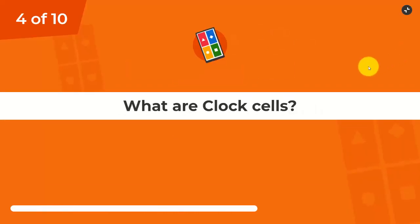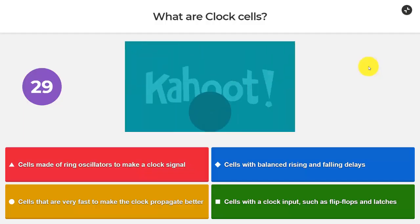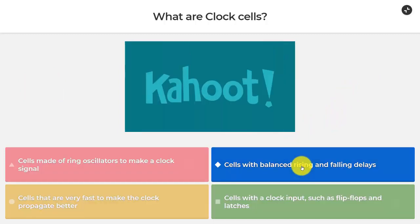Question number four. What are clock cells? Cells made of a ring oscillator to make a clock signal. Cells with balanced rising and falling delays. Cells that are very fast to make the clock and popping faster. Cells with a clock input such as flip-flops and latches. So going back to the lecture, we know what it is. Cells with balanced rising and falling delays.